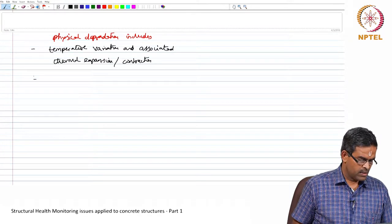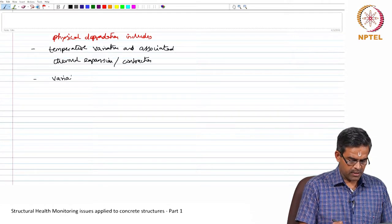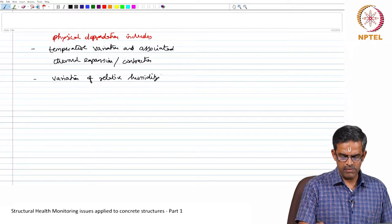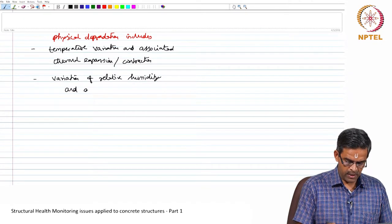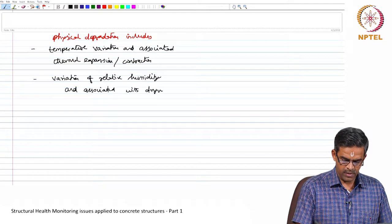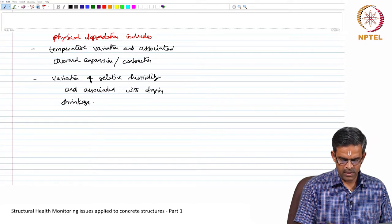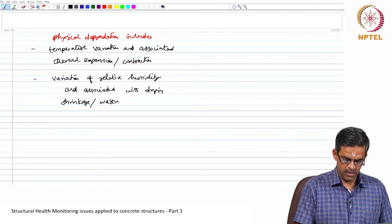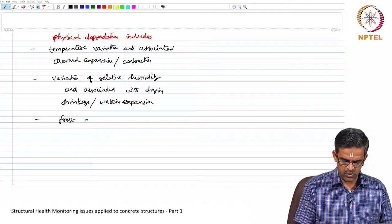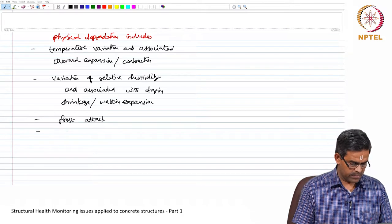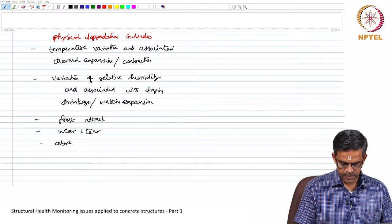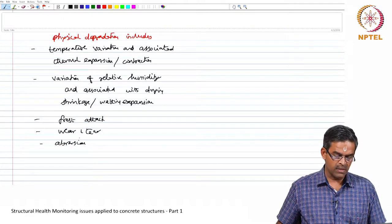There can be issues which can cause physical degradation arising from variation of relative humidity. This is very important for coastal structures and issues associated with drying shrinkage and wetting expansion. There can be issues related to frost attack which can cause physical degradation. There can be wear and tear and abrasion on concrete surface which can result in physical degradation.